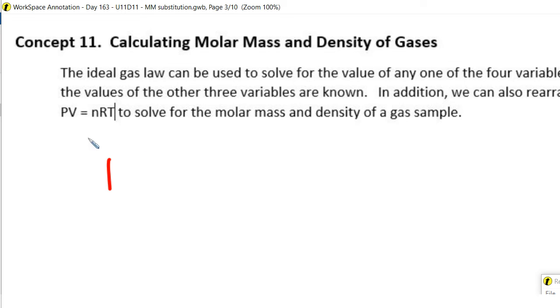So right now we've been using the ideal gas law equation, which is PV equals nRT, to solve for one of these four variables. So as long as we know three out of four things, we can solve for the fourth. We've got P for pressure, V for volume, N for number of moles of gas,